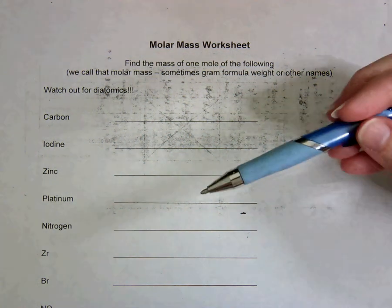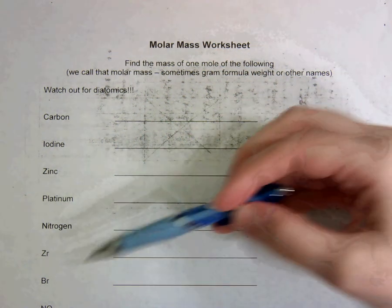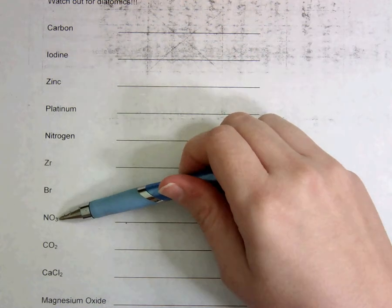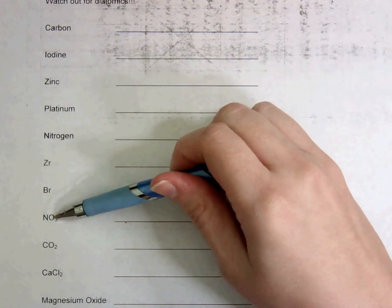Now if you have, for example, right here, let me move this up so you guys can see it, NO3, this doesn't mean that I have to multiply this O times 2.